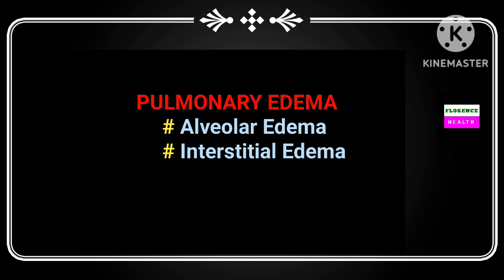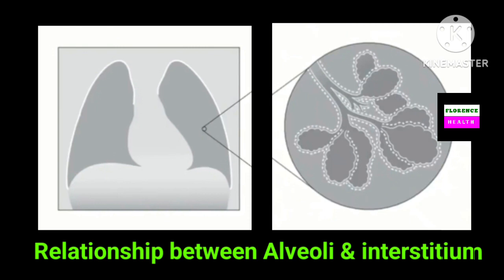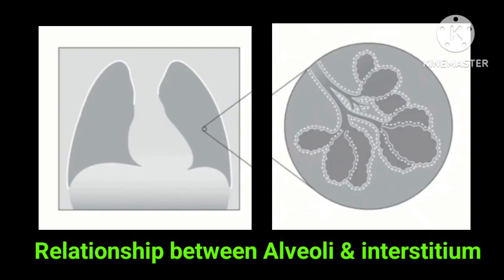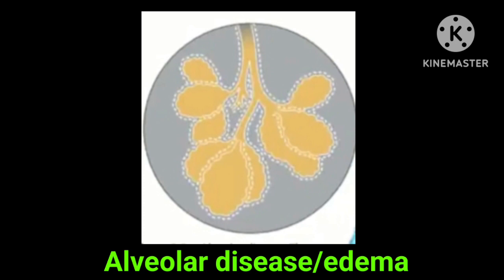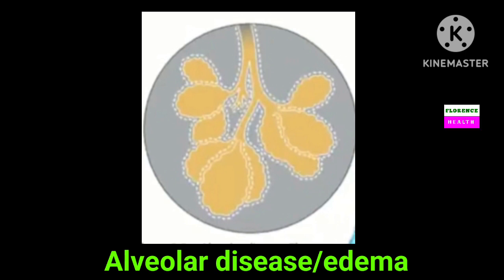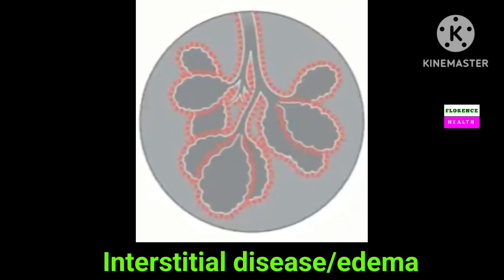Let's go through a diagram to see the relationship between alveoli and interstitium and where they are located. The alveoli are at the center, surrounded by the interstitium. When fluid collects inside alveoli, it is alveolar edema — alveoli look more white, so the whole lung looks more white, as shown in the figure. In interstitial edema, fluid collects inside the interstitium, where alveoli look black but white lines appear around them, as shown in the figure.